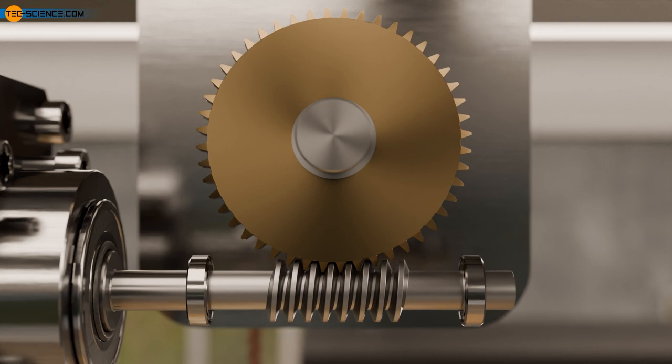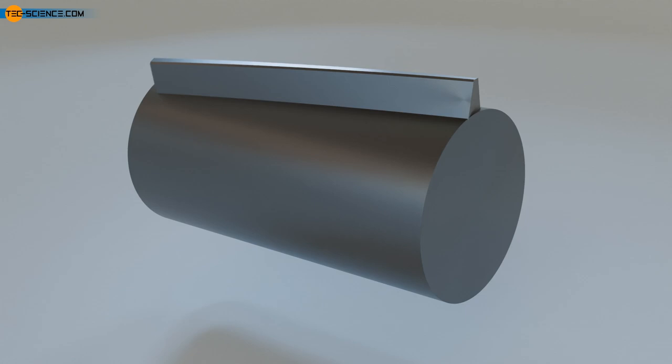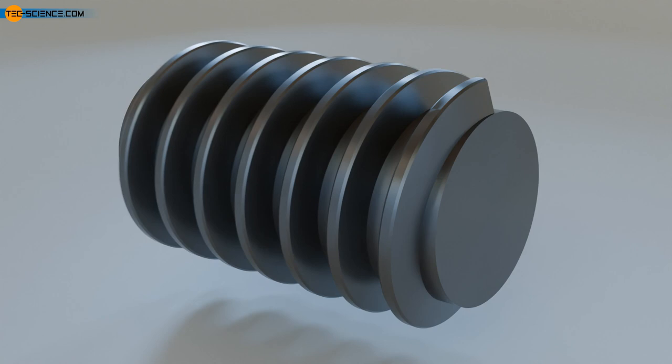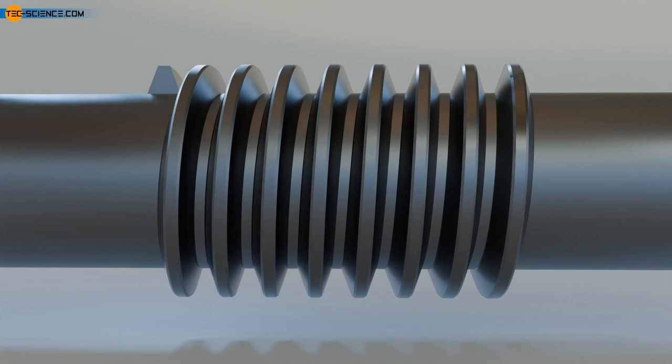The worm can be regarded as a special case of a helical gear. Imagine a gear with only one tooth. Now increase the helix angle to such an extent that the tooth winds around the gear several times. The result is a single-toothed worm.